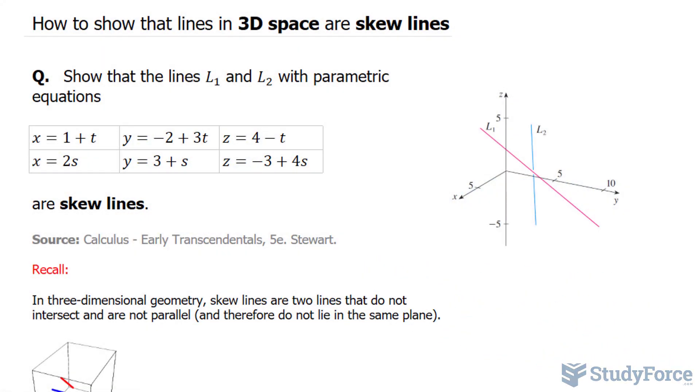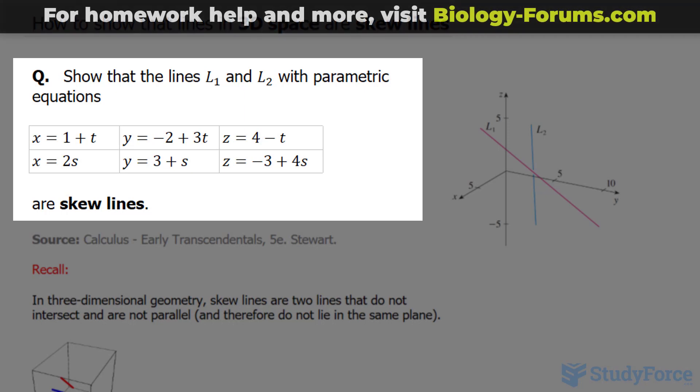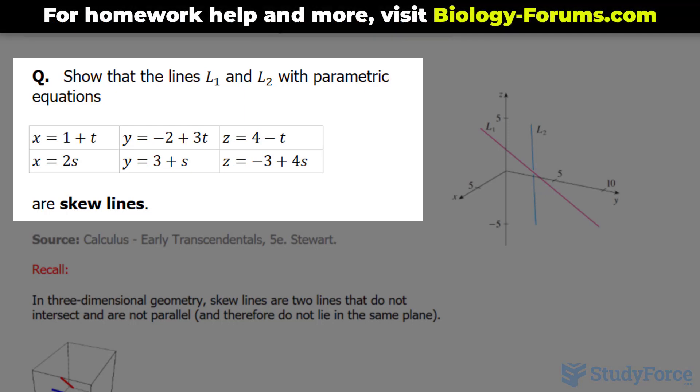In this lesson, I'll show you how to prove when lines in 3D space are skew lines. The first question reads: show that the lines L1 and L2 with the parametric equations provided are skew lines.